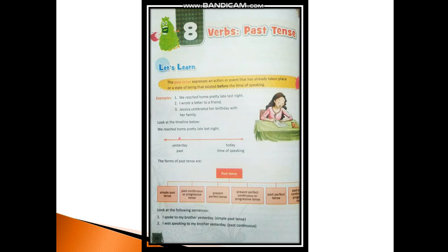So if you look at the timeline given here, the left arrow is going in the past and the right arrow is going in the future. The point where we are standing right now is today — yesterday, today, and tomorrow. So something which happened yesterday will be our past, and something which is happening today will be the present. So as we are standing in today and talking about yesterday, it will be considered as our past.